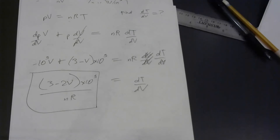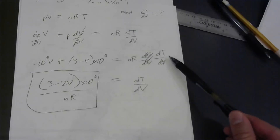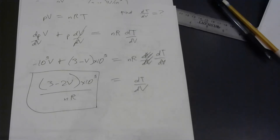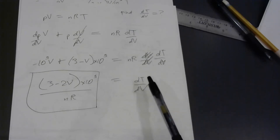I marvel sometimes at the efficacy of this notation bequeathed to us — I believe by Leibniz, who introduced differentials for representing derivatives. I'm no expert on the history of calculus, but differentials sure are convenient and get used extensively in physics derivations.